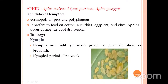The next pest is aphids: Aphis gossypii, Aphis malvae, and Myzus persicae. It belongs to the family Aphididae and order Hemiptera. It is a cosmopolitan and polyphagous pest, infesting different cucurbits. Aphis malvae infests bitter gourd in South India. It is also a pest of cotton, cucurbits, eggplant, and okra. These aphids multiply during cool dry conditions.